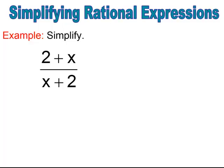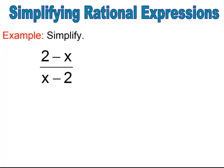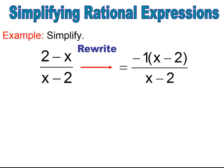Notice: when you have something like 2 plus x over x plus 2, and it's addition, you can switch it around and simplify — in this case you get 1. But when it's a minus, you can't just switch it around. You have to first pull out a negative 1. When you switch it around with a minus, you must pull out a negative 1, and then you can simplify and end up with negative 1 as your reduced rational expression. It's important to understand the difference between a plus and a minus when switching terms around.